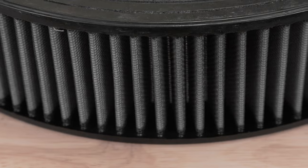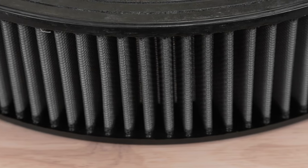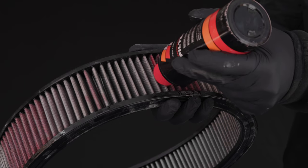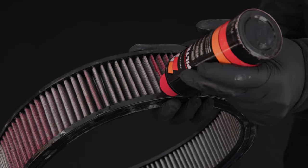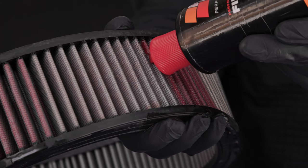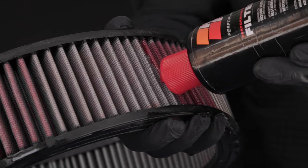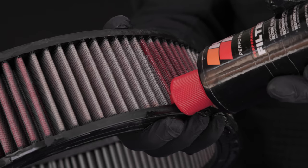Once the filter is completely dry, you're ready to apply new filter oil. K&N filter oil is available in either a squeeze bottle or spray can. If using the squeeze bottle, apply filter oil evenly along the crown of each pleat.